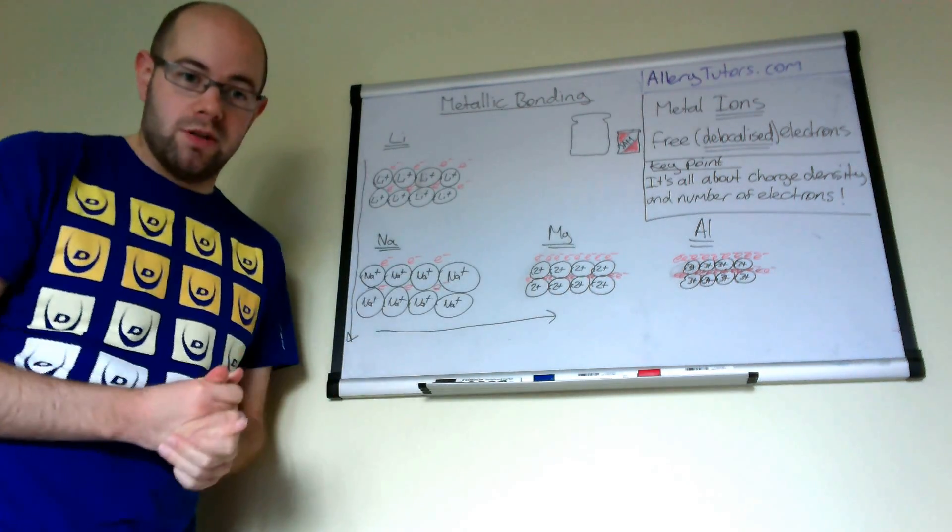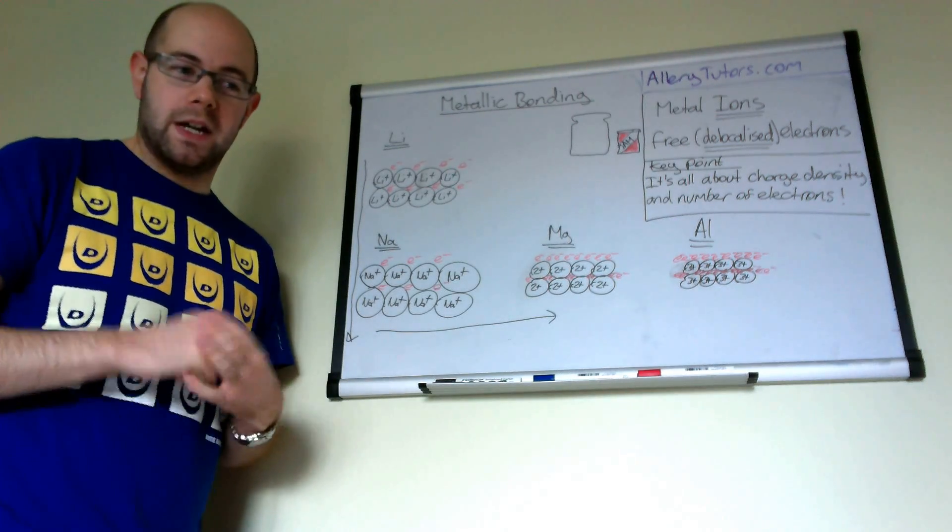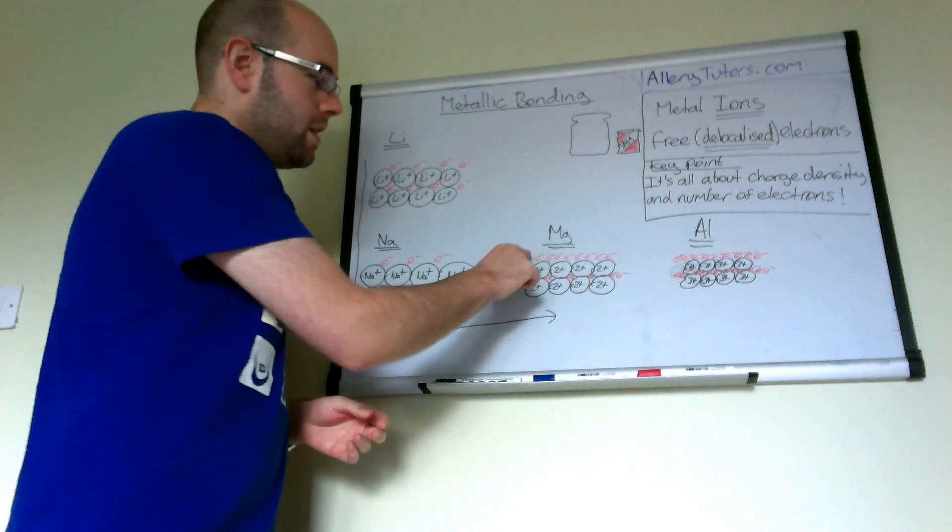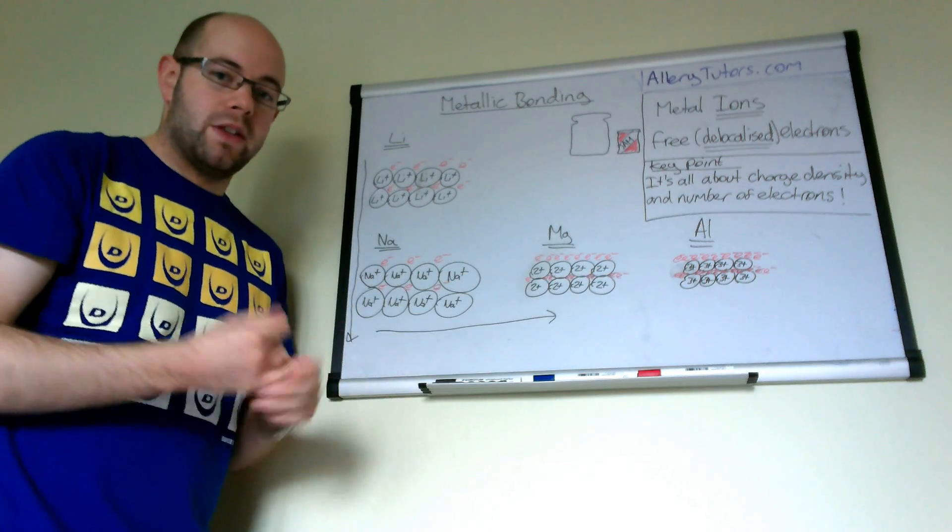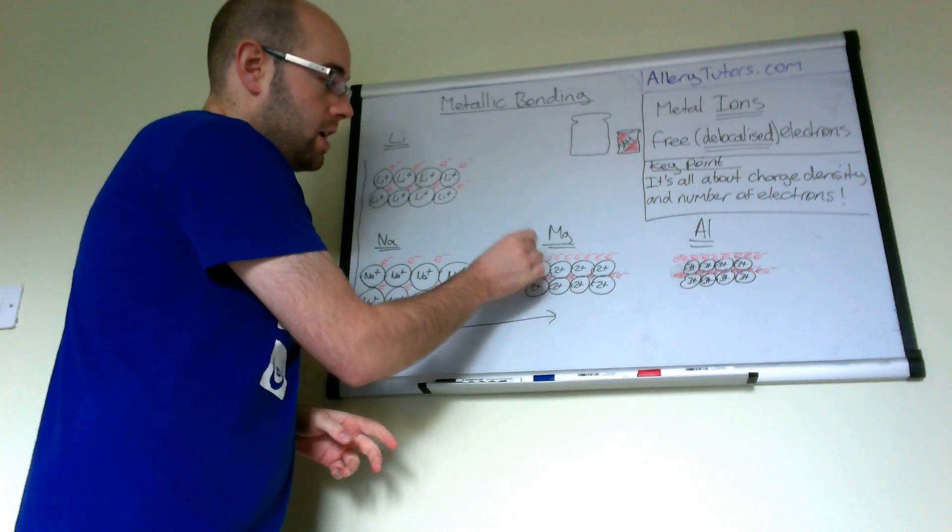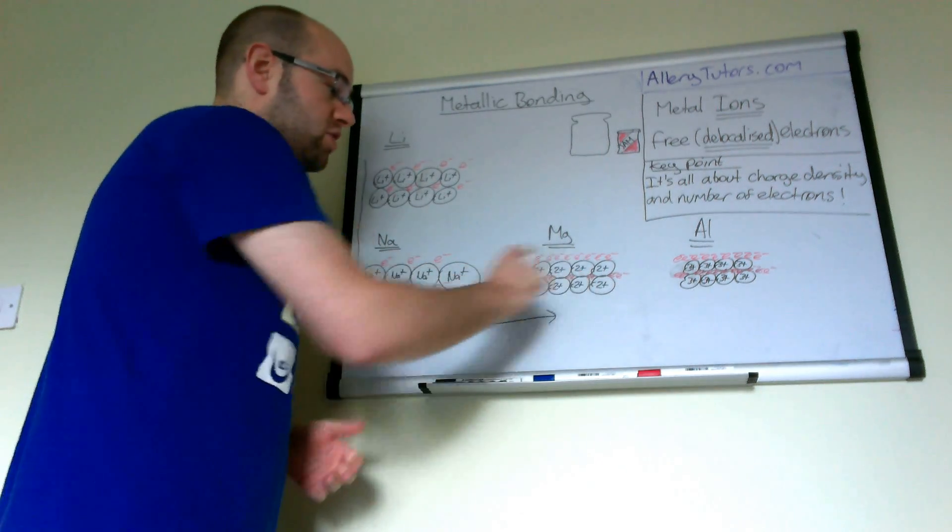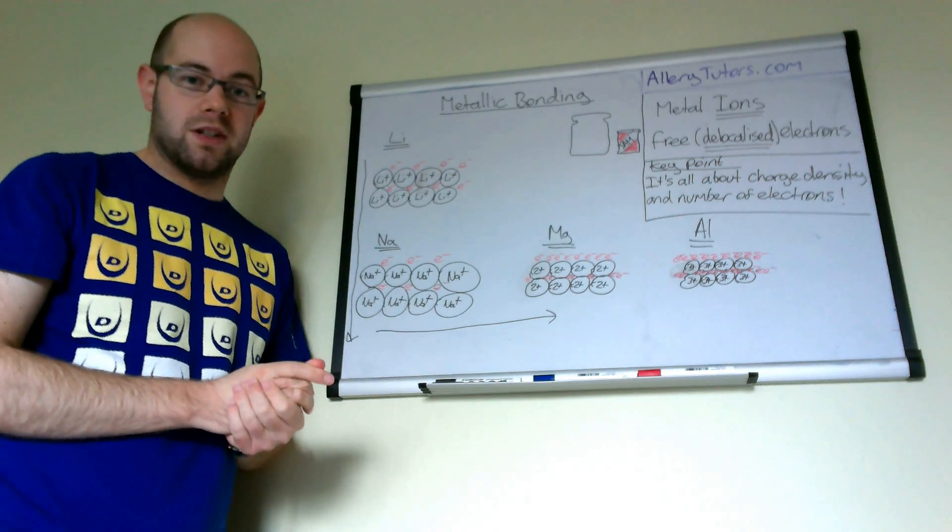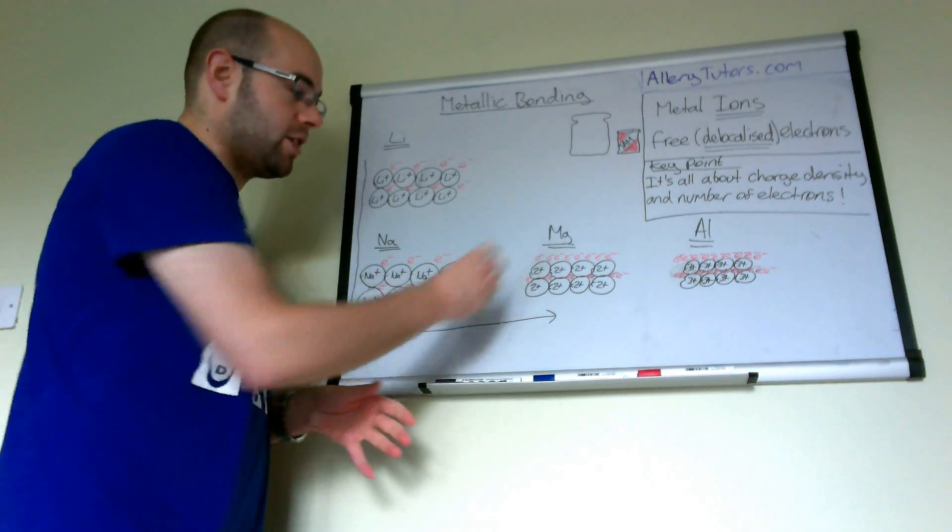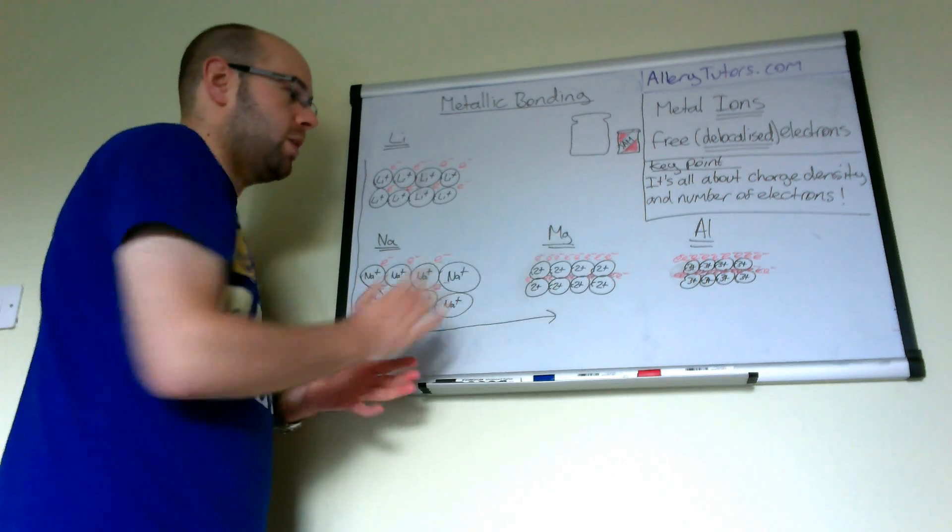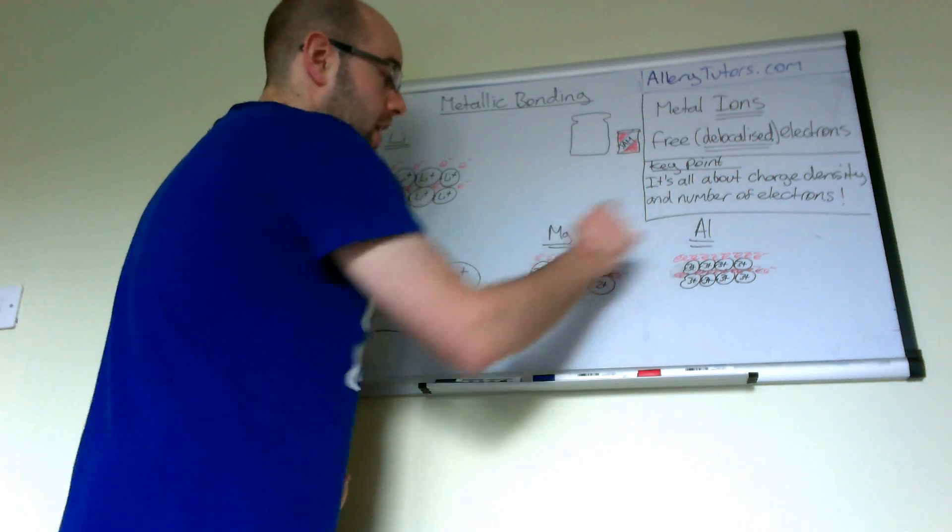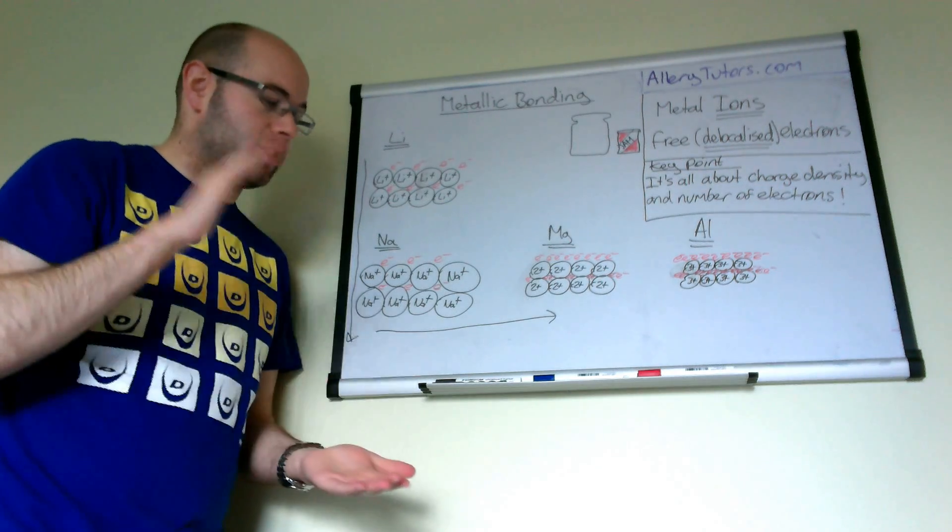Magnesium is in group two, so it forms two plus ions and gives up two electrons to form the electron cloud. You can see in the diagram that the electrons are now delocalised and we have more of them bonding or attracted to the positive metal ions. Because we've got more electrons and higher charge density, which means two plus charges instead of one plus, the attraction between electron and metal ions is much stronger. That's why the strength of magnesium increases. It's all about charge density and the number of electrons.